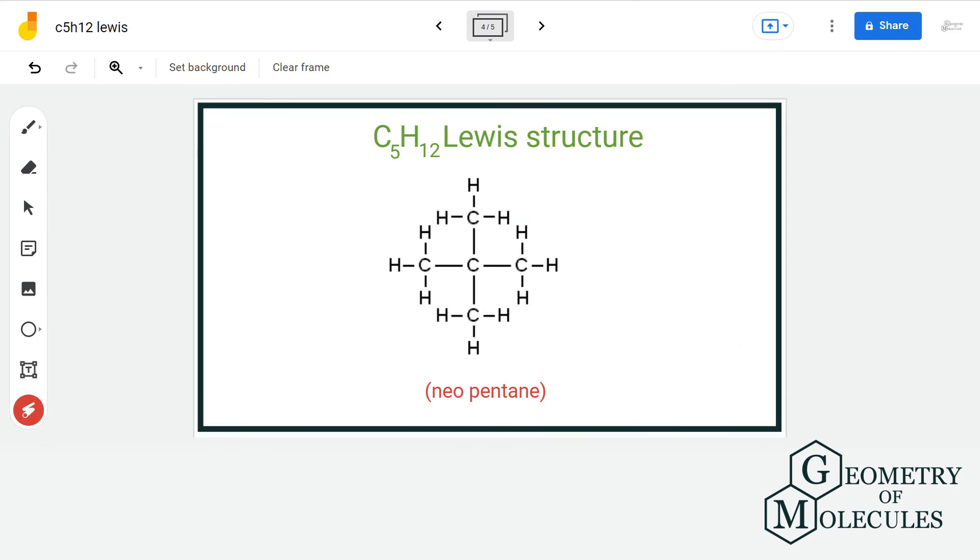The third isomer having formula C5H12 is neopentane where we have quaternary or 4 degree carbon atom. Whenever carbon atom is attached to four other carbon atoms it is termed as quaternary carbon atom and this is the structure of neopentane.